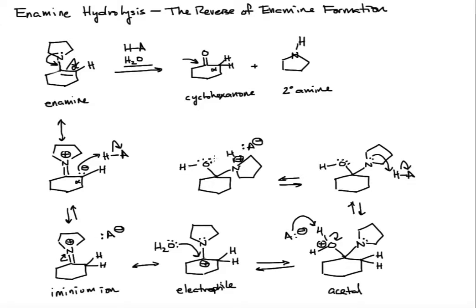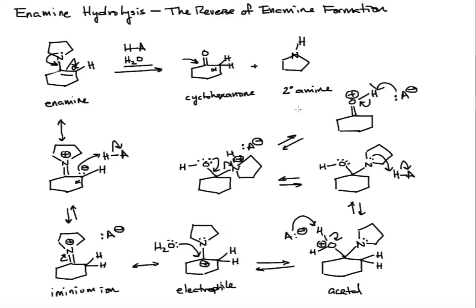Now the lone pair on oxygen can collapse to do an elimination. That restores the lone pair on nitrogen, giving us our secondary amine. We have one more proton transfer to do before we're done — the carbonyl is still protonated. Our conjugate base will then abstract that proton, and we end up with a neutral ketone.